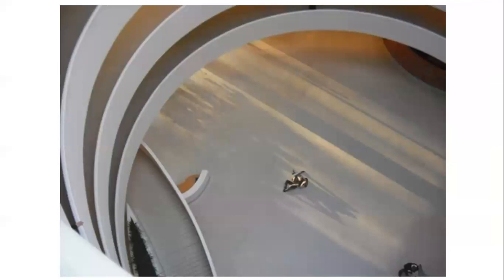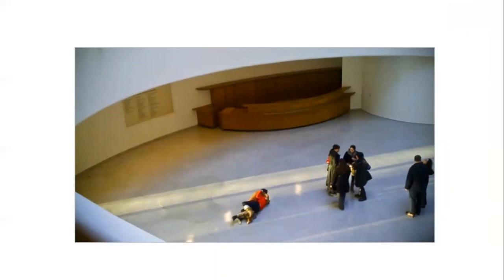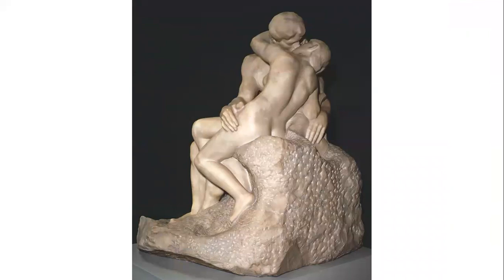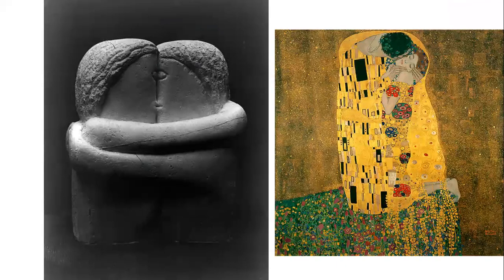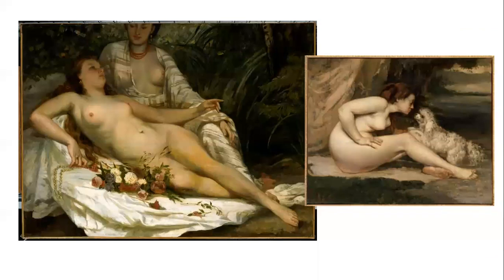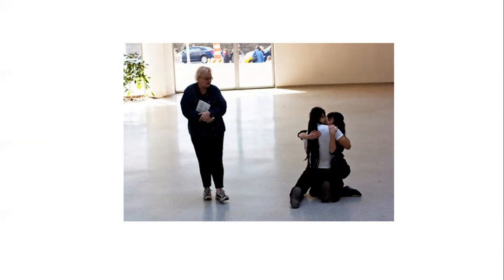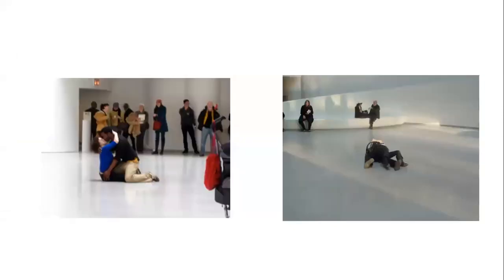This is the Guggenheim Museum looking down on the main entry, and you can see there's a couple laying on the floor kissing. People are walking around the museum, but here's this couple right there. Tino Segal drew from a tradition in art of depicting people kissing — it's called 'The Kiss.' You can see two famous painted examples, including Gustav Klimt on the right. So he decided to actually have real people kissing right in the entryway. The Guggenheim is in downtown Manhattan. Some people stop and watch, and some just try to step over them.